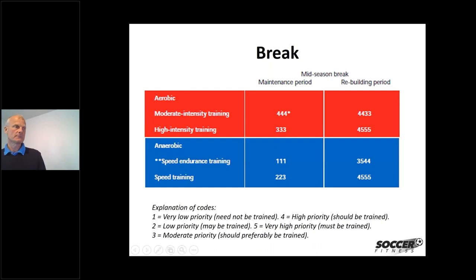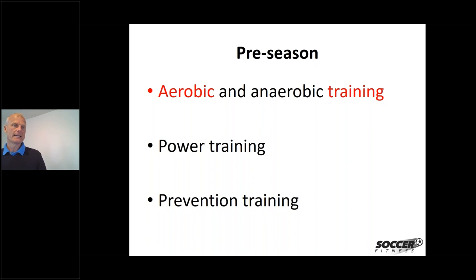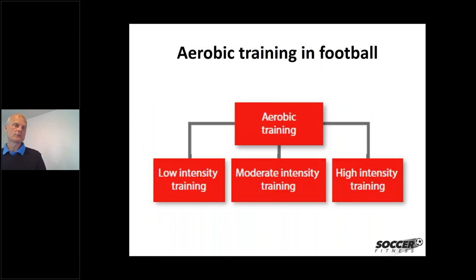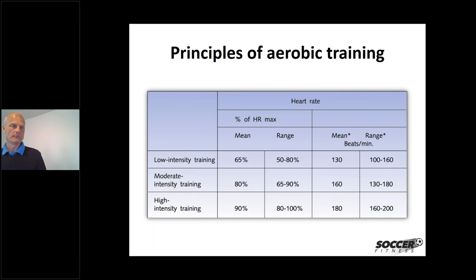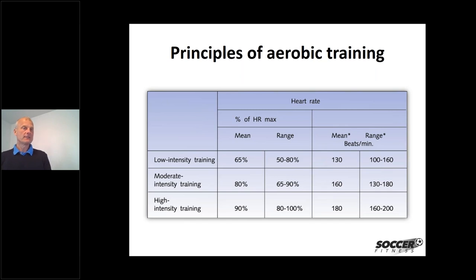As soon as players are accustomed to training again, speed endurance priority can increase to five, dropping back to around four in the last two weeks. Speed training should have high priority throughout and ideally players will have prepared some speed work before returning, since you need to prepare for speed training as well. The aerobic and anaerobic training framework lets us control things carefully because players need to be in specific heart rate zones during training.